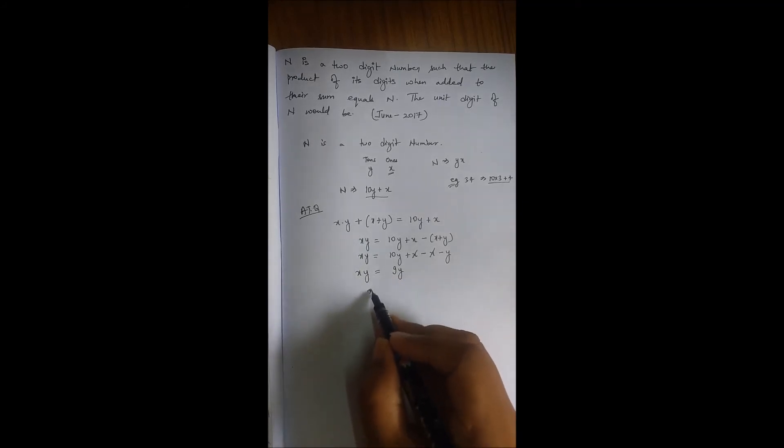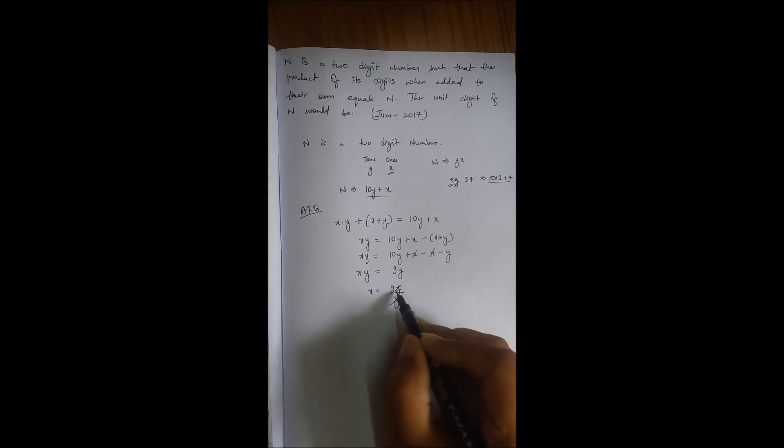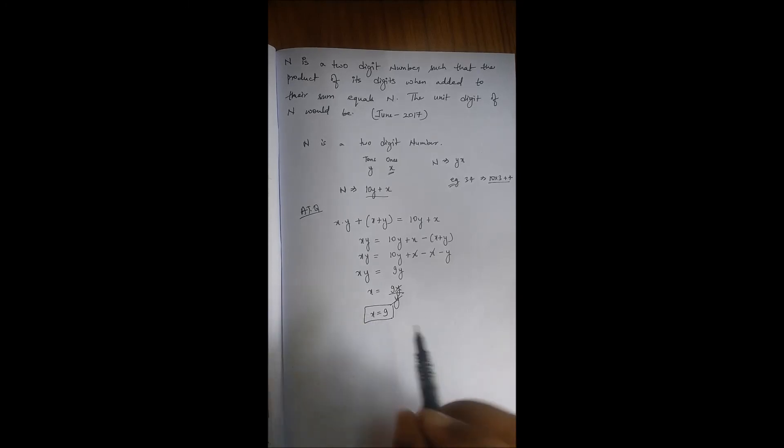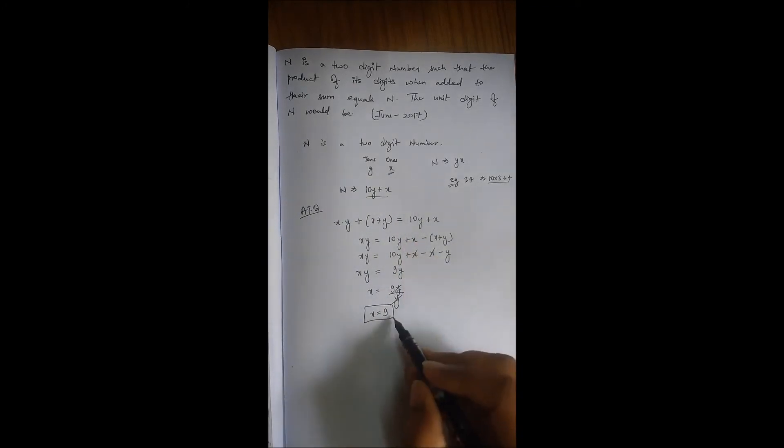Or X equals 9Y upon Y. Y can be cancelled out and X becomes 9. So in this question, we have to only find out X, the value of X which was the one's digit. So the answer will be 9.